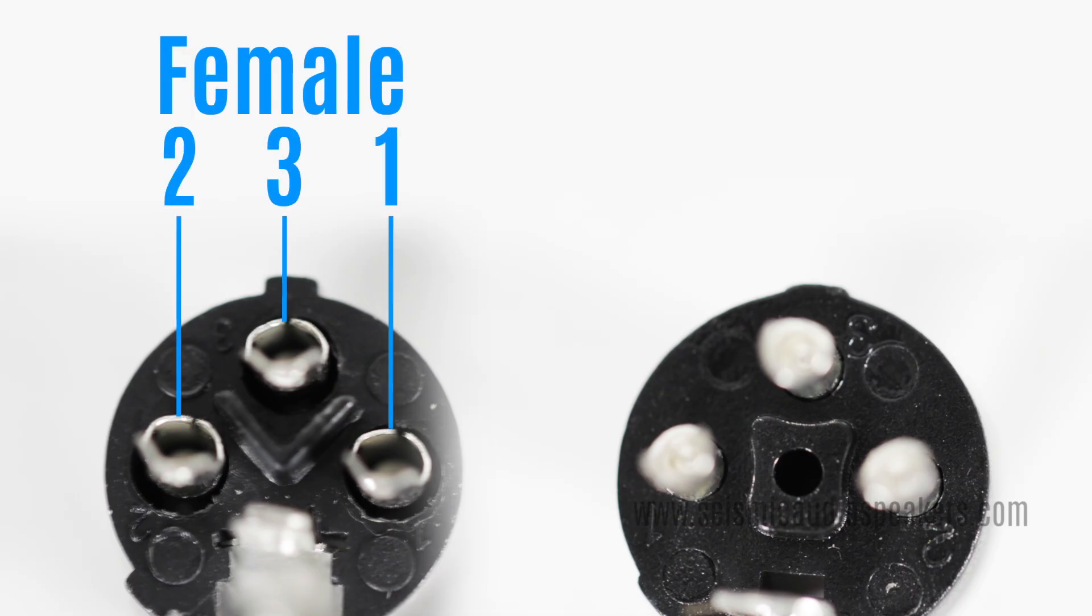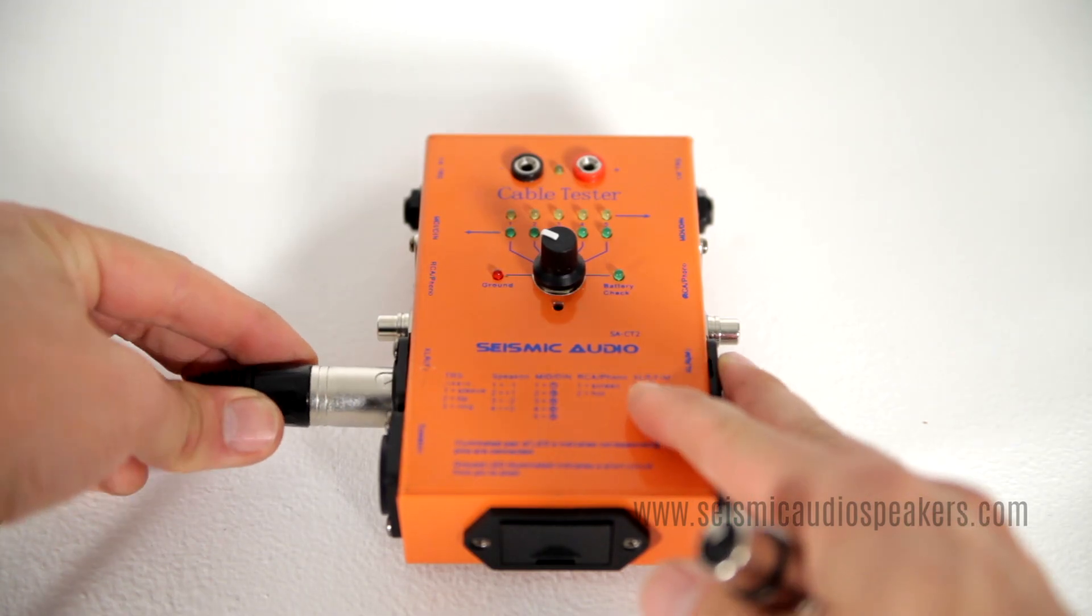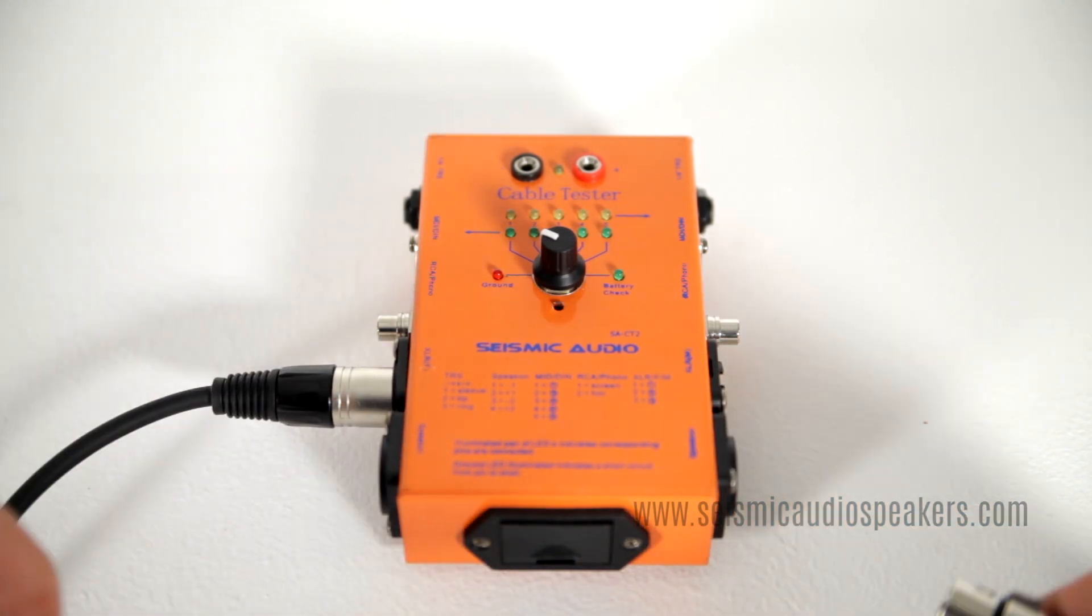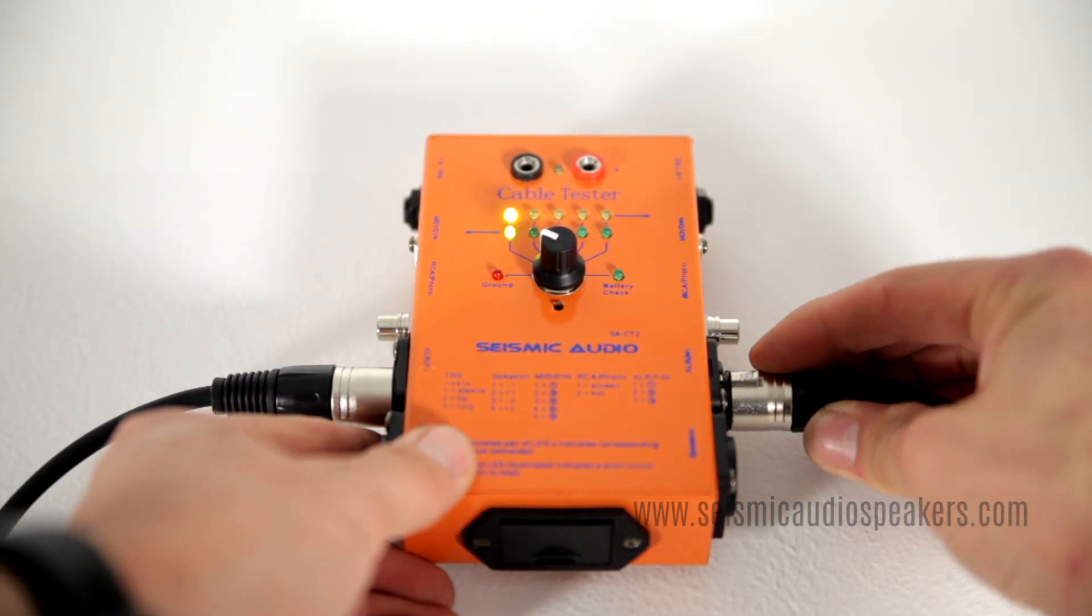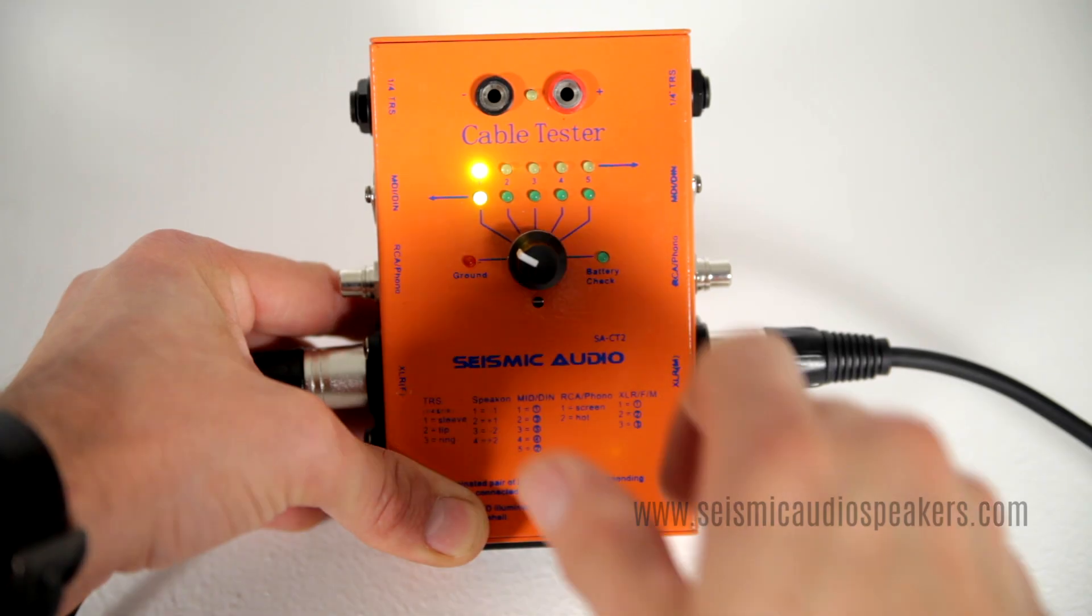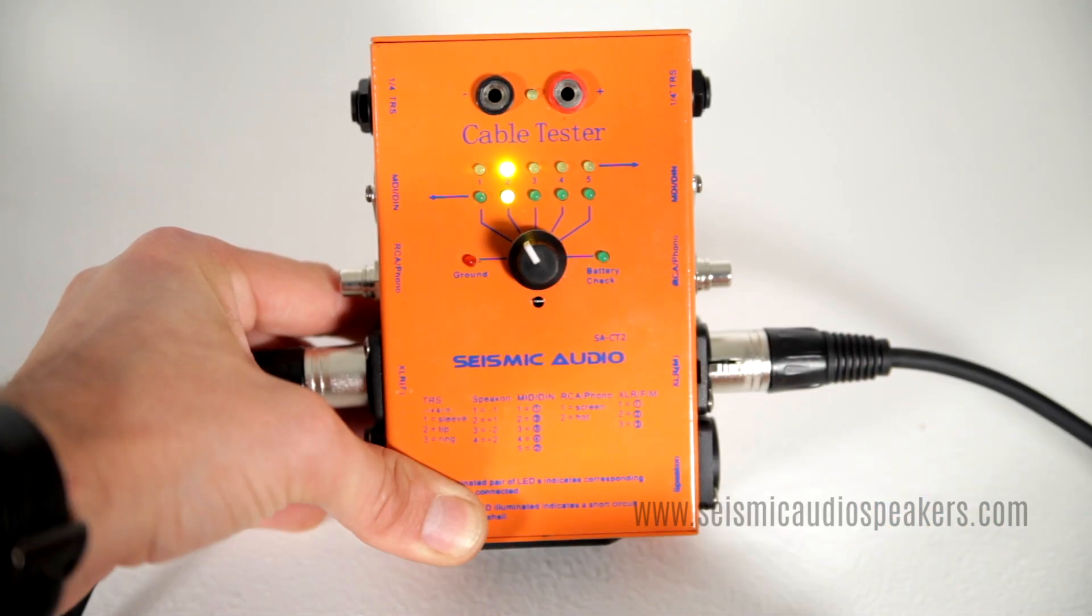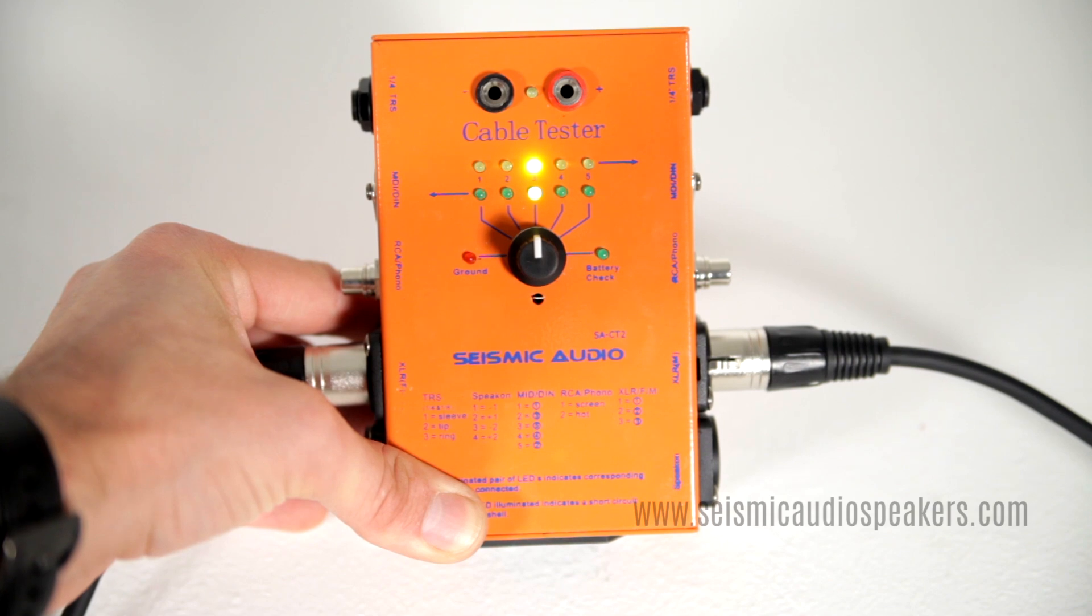Pins 1 and 2 on the female connector are opposite than the male. Other than that, everything's about the same. Once both ends are complete, test the cable. On this tester, we see that pins 1, 2 and 3 are all showing continuity, indicating a good cable.